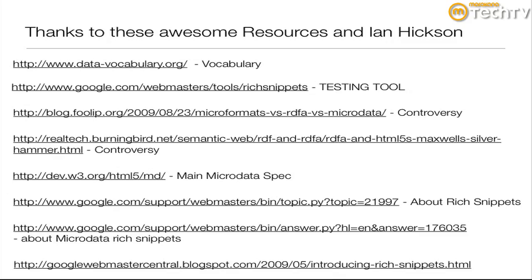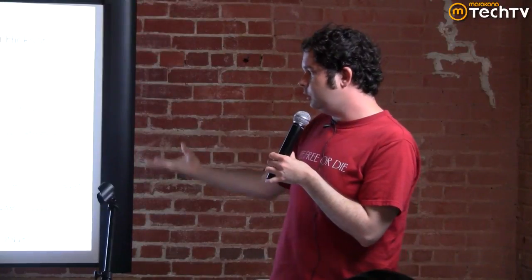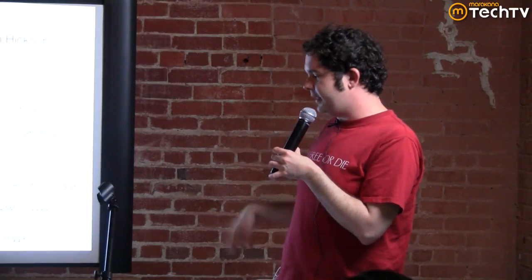Here are some of the resources I used. Data-vocabulary.org is the primary one, and you can feasibly see how you could link off to a different vocabulary — it wouldn't be that difficult. Google supports this one, so I'm pretty much with them at this point. I've also linked off to the testing tool, some blogs about the controversy between RDFa and microdata, the spec, and introducing rich snippets. These links at Google at the bottom will take you to the page where you submit your data to Google — you just hit submit and they can look at it and might put it in the search results.